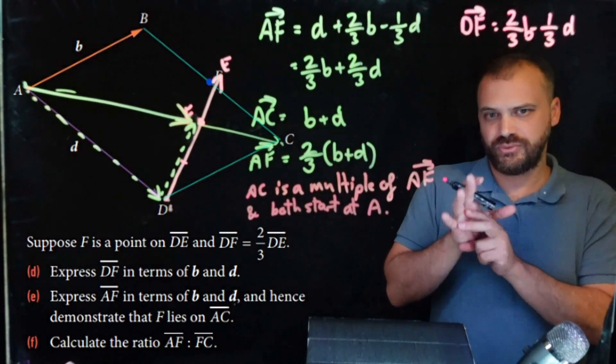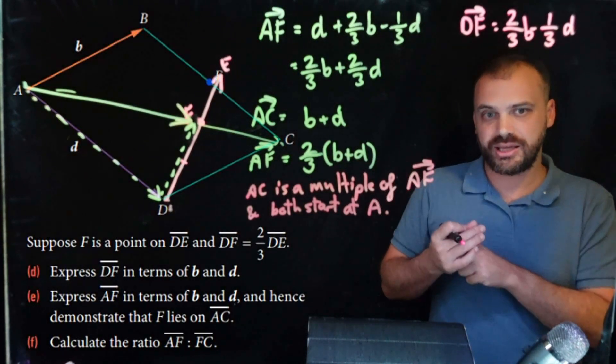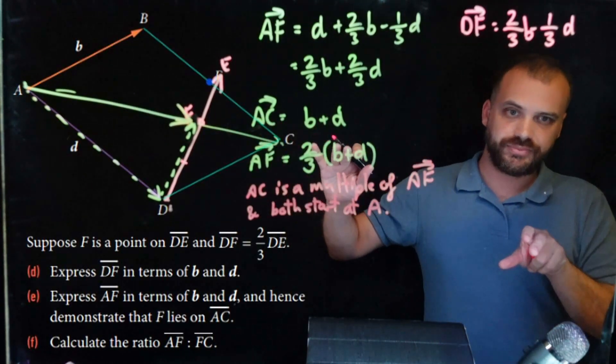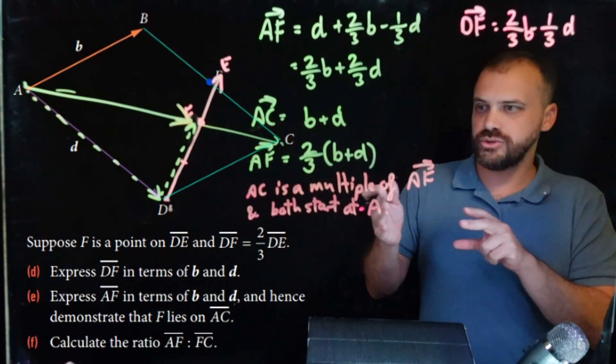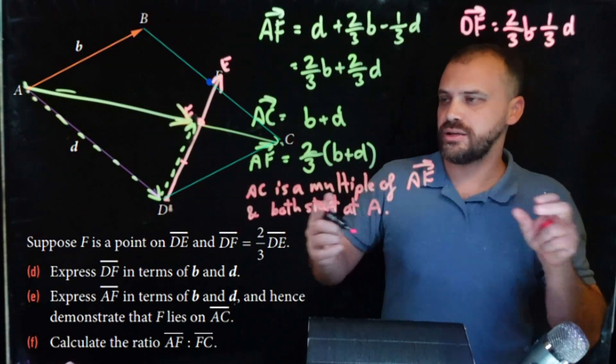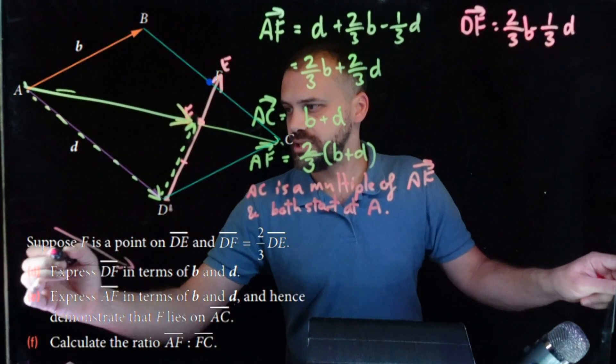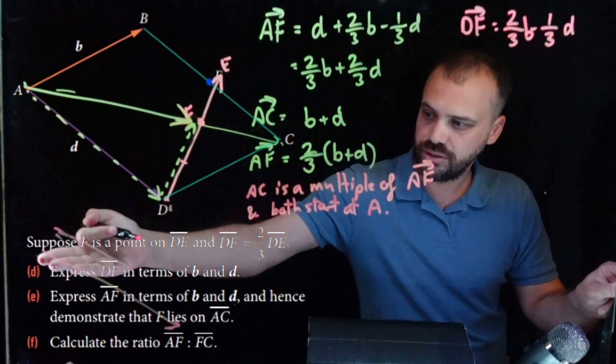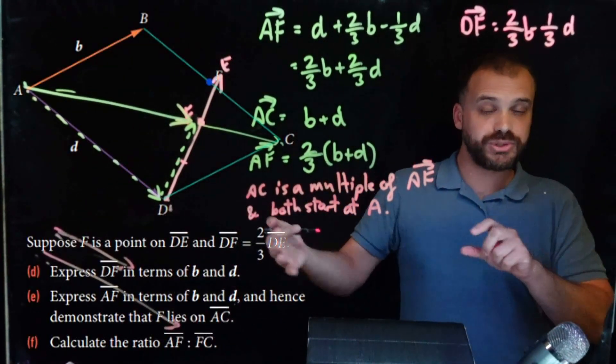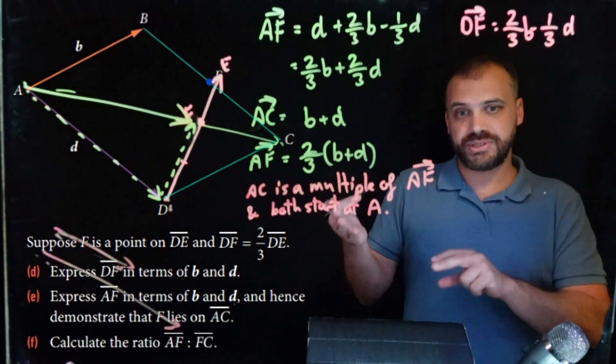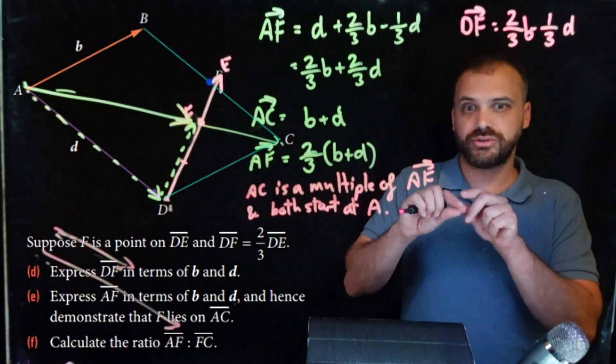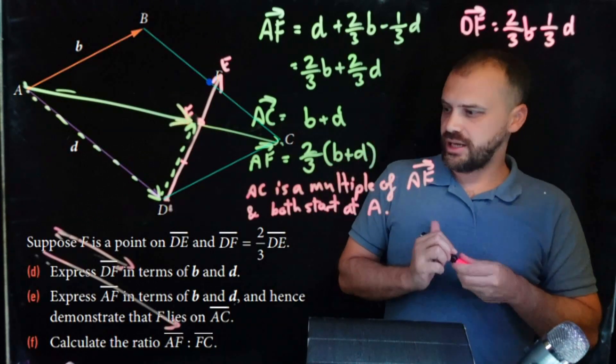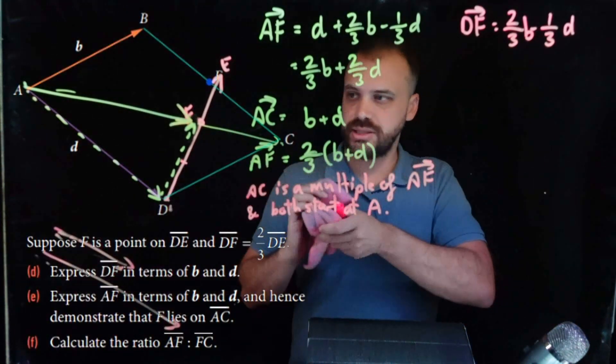Now, that's good because that means that they're moving in the same direction. They're just ones longer and shorter than the other, but we also need to show that they're on the same point. So, we can finish this off. We're demonstrating that F lies on AC by saying AC is a multiple of AF. The fact that they're multiples of each other means that they're moving in the same direction. They're important for this. If we don't know that they're both starting at A, that wouldn't mean that they're lying on the same thing, right? Because it could be that one vector was this and one vector was this. So, shorter, longer. So, they're multiples of each other, but if they're not starting from the same spot, then they don't lie on each other. That is part B done.